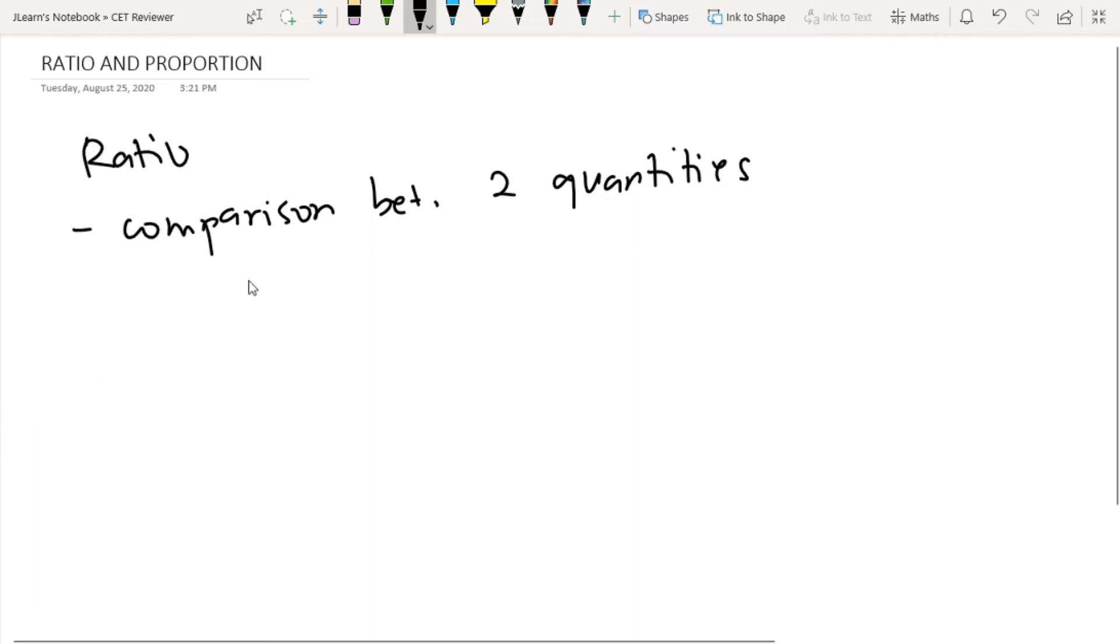Given two numbers, let's say x and y, the ratio is written as x colon y or x over y.